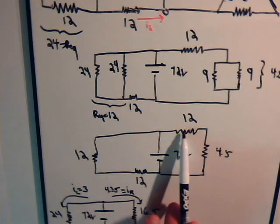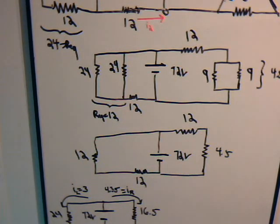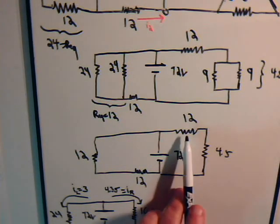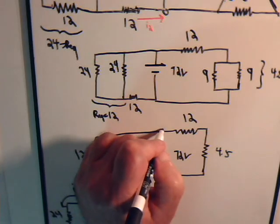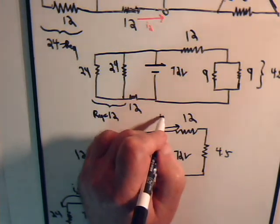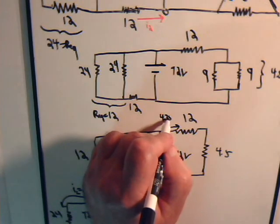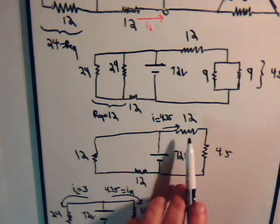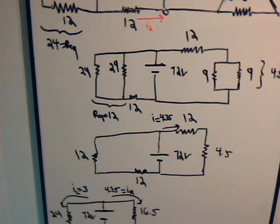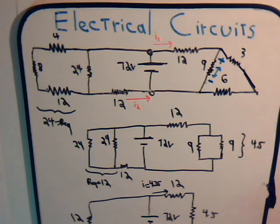That means the current that goes through this 12 ohm resistor — this 16.5 is comprised of these two resistors in series. The current that goes through each one of these has to be the same, of course, so this is 4.35 amps that goes into this 12 ohm resistor. And that was one of the questions we wanted to answer.